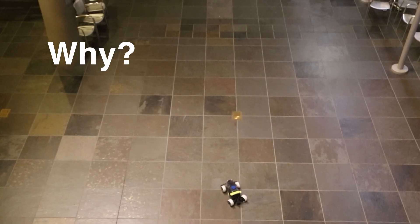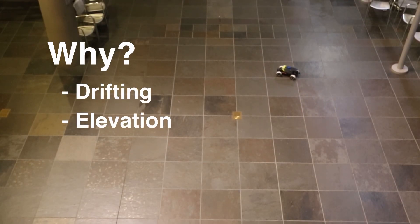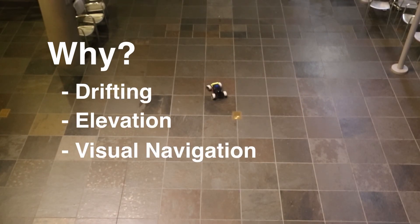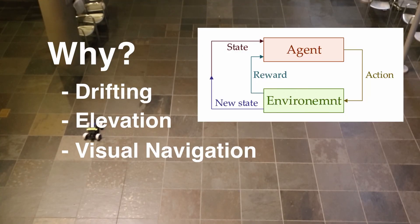Before we begin, you might be wondering why do we care about these three tasks: drifting, elevation, and visual navigation? These aren't random. Each one stresses a different part of the robotics and reinforcement learning pipeline, and together they cover a pretty nice range of problems and demonstrate how RL can be used in a variety of cases.